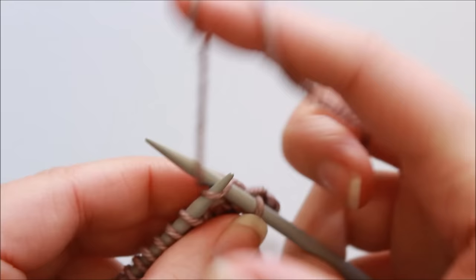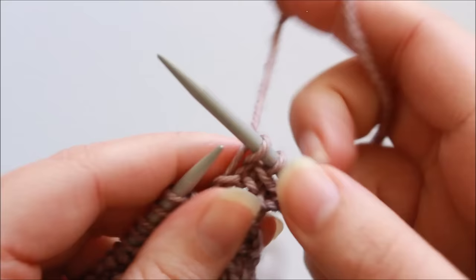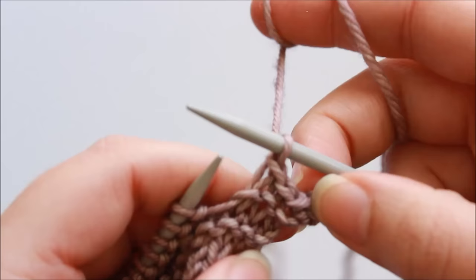Knit one, pass the first work stitch over the last stitch, that's three. So one more, knit one and pass the first work stitch over the last, and that has created a picot.